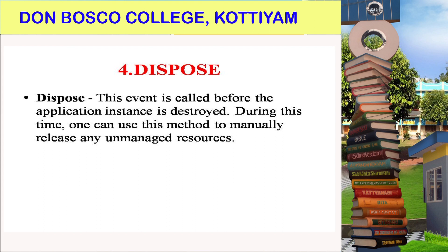The fourth stage is Dispose. This event is called before the application instance is destroyed. During this time, one can use this method to manually release any unmanaged resources. The unmanaged resources are made available and manually released through the dispose event, after which the application instance is destroyed.